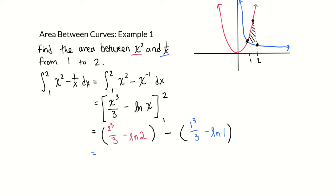This is 2 to the third over 3, which is 8 over 3, minus ln of 2, minus 1 to the third over 3, which is 1 third, plus ln of 1, which is 0. This simplifies to 7 thirds minus ln of 2.